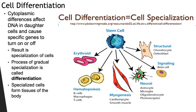Most undifferentiated cells inside the body are known as stem cells. From stem cells, depending on which genes are turned on or turned off, you can develop into different types of cells, each with unique characteristics.